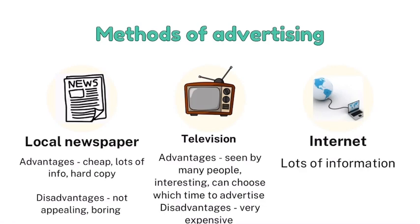Now, let's look at the methods of advertising. First is a local or national newspaper. The advantages are that it is cheap to advertise, a lot of information can be provided, and it is a hard copy resource — so customers can check the advertisement at any time. The disadvantage is that it is non-appealing; it's going to be very plain and boring and won't attract customers easily.